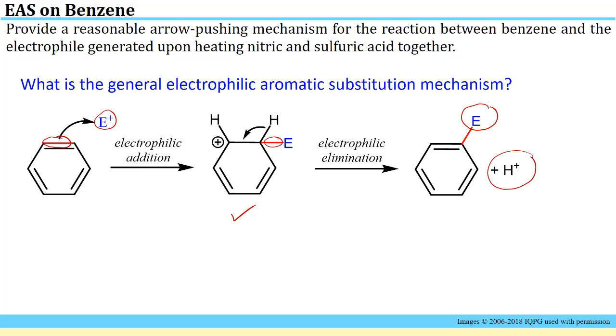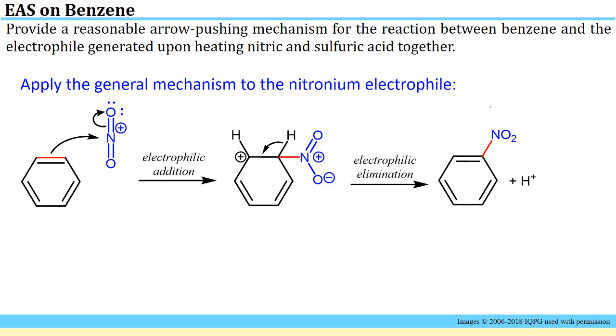In this case we are going to use the nitronium ion as the electrophile. If we apply the general electrophilic aromatic substitution mechanism to using the nitronium electrophile, we'll have electrophilic addition of the nitronium, and we get this intermediate that has the nitro group on it already. Electrophilic elimination of this proton then leads to the formation of nitrobenzene and the proton.